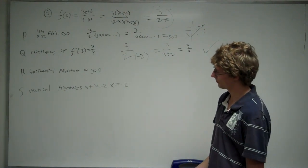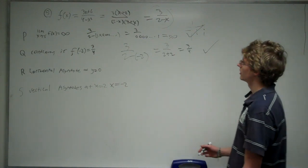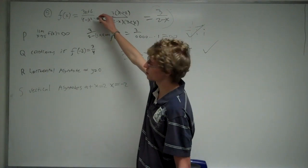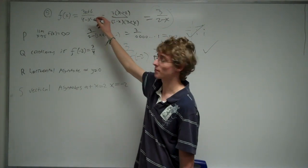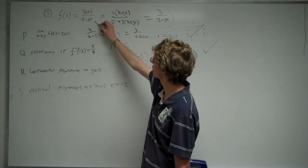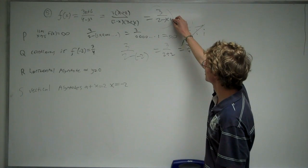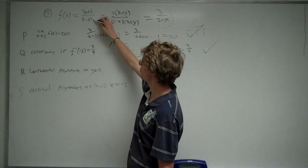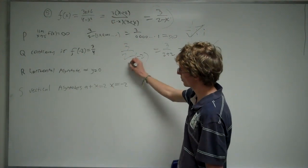It says there's a horizontal asymptote at y equals 0. There's a horizontal asymptote whenever the power, the highest power on the denominator, is greater than the highest power in the numerator. In this case, the highest power is x squared, or in the simplified version it's 1. And the highest power on the top is 1 here. So 2 is greater than 1, so we do have a horizontal asymptote at y equals 0.